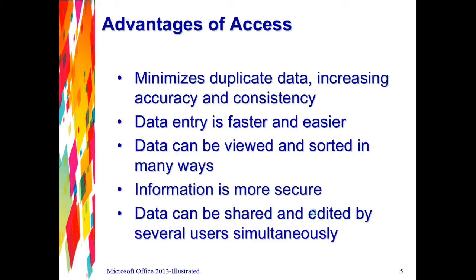The relational nature of data stored in an Access database allows us to minimize duplicate data entry, which creates more accurate, reliable, and consistent information. For example, you have customer data in a customer table that is entered only once, and not every time a customer makes a purchase. Most businesses assign an account number and use it to retrieve all your information — so you don't have to re-input the name, address, and phone numbers, which could easily be mistyped if re-entered.